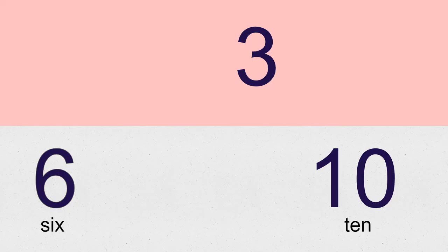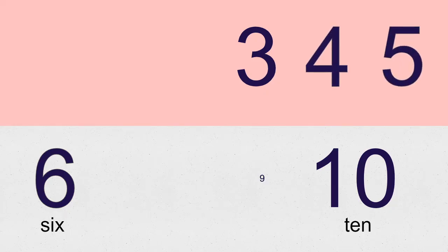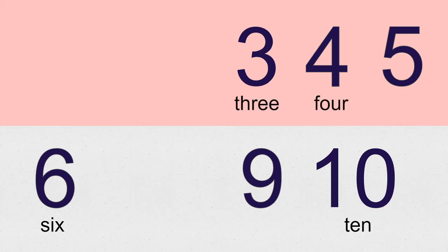Three, four, five, and nine — all of these words have two vowels in them. Three and four both have vowels that are walking together, so the first vowel is gonna say its name and the next vowel will be silent. Five and nine also have two vowels — the first vowel will say its name and the next vowel is that magic e, or sneaky e, that will be silent.